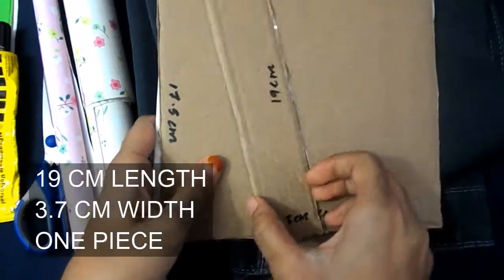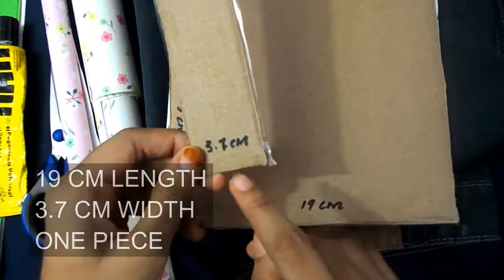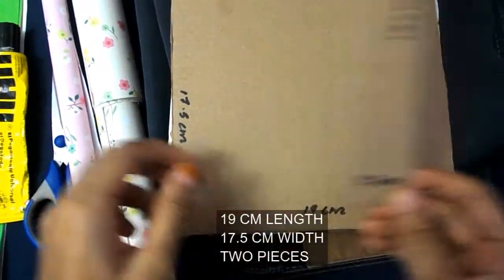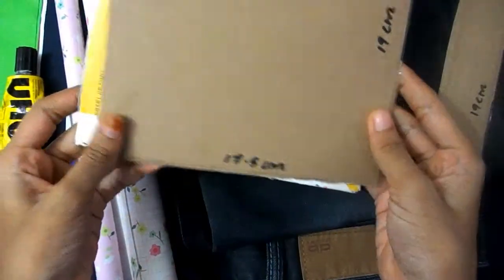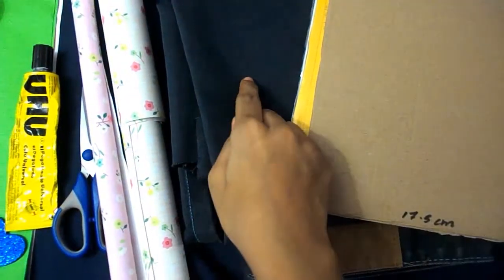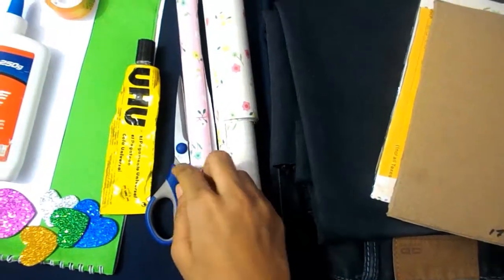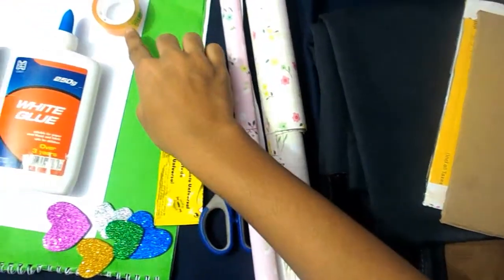Cardboard of size 19cm length, 3.7cm width, 19cm length, 17.5cm limited, 2 pieces, jeans, wrapping paper, scissor, glue, tape, stickers, color paper, effort sheets, stapler.